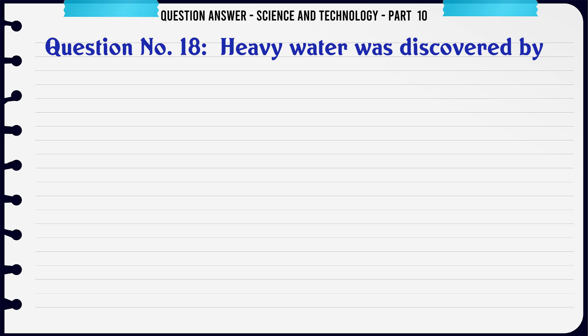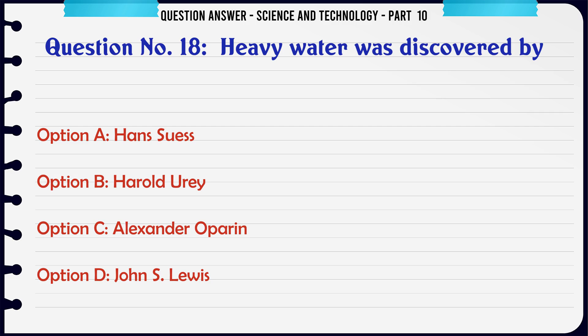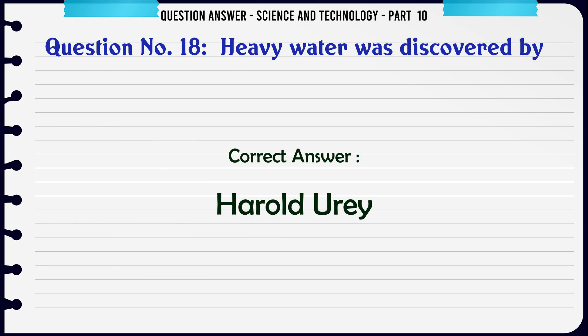Heavy water was discovered by. A. Hans Suez. B. Harold Urey. C. Alexander Oparin. D. John S. Lewis. The correct answer is Harold Urey.